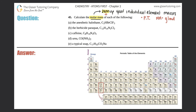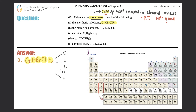Let's start with letter A: the anesthetic halothane, C₂HBrClF₃. So many halogens, but we've got to do it. How many different elements are here? We have carbon, hydrogen, bromine, chlorine, and fluorine — so there are five different elements.